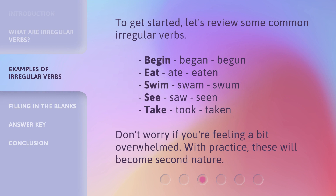To get started, let's review some common irregular verbs. Begin, began, begun. Eat, ate, eaten. Swim, swam, swum. See, saw, seen. Take, took, taken. Don't worry if you're feeling a bit overwhelmed. With practice, these will become second nature.